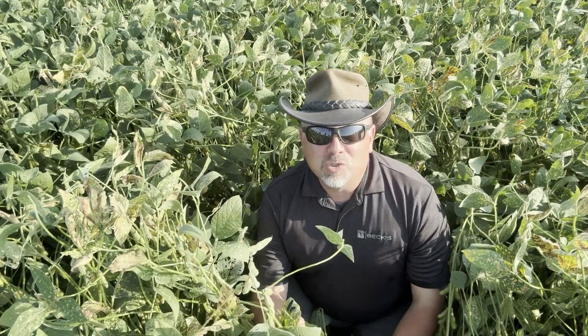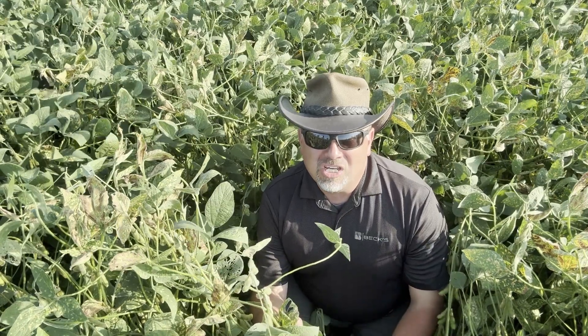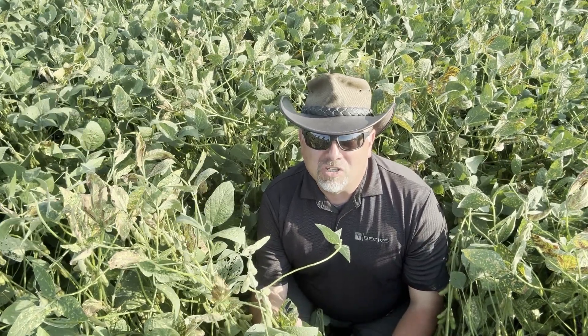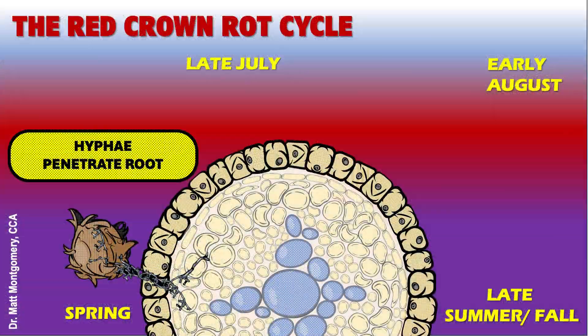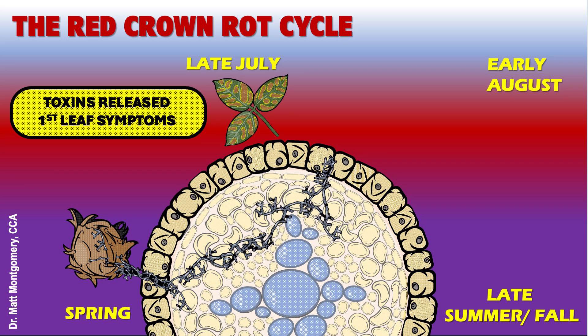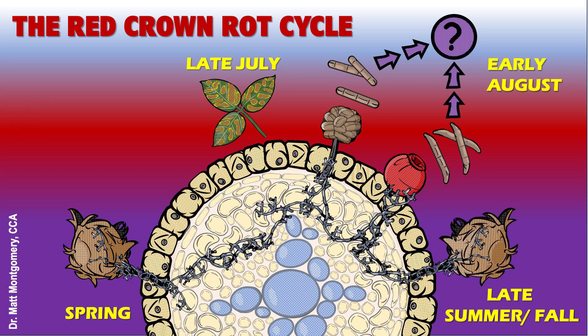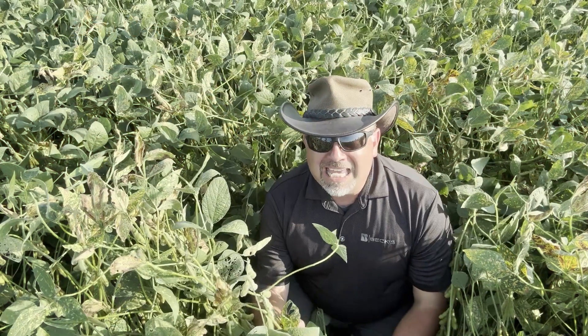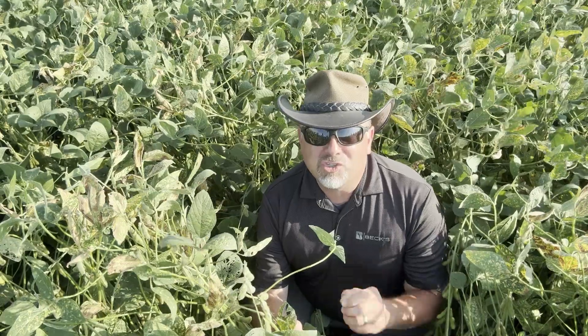We know this disease overwinters in the soil as what's called microsclerotia — little tiny knots of fungal hyphae that probably let this disease persist for really long periods of time. Meaning once you've got it, you've got it. And again, we know the yield losses can be substantial.